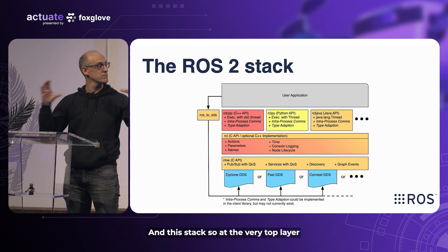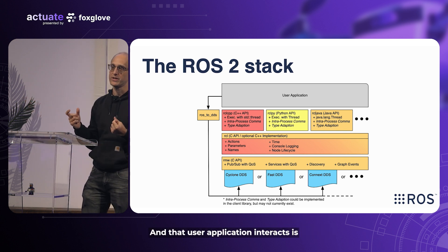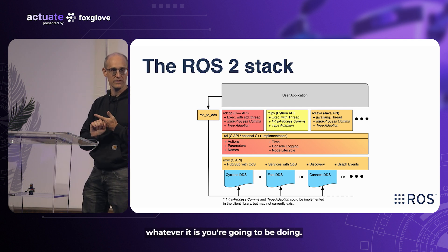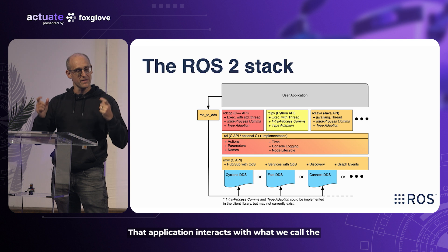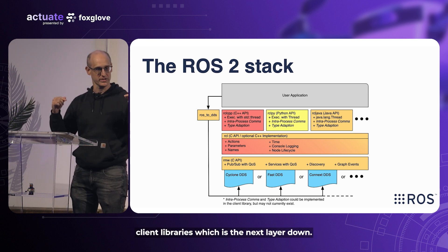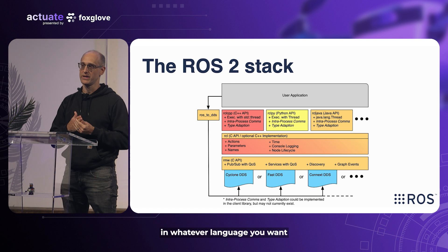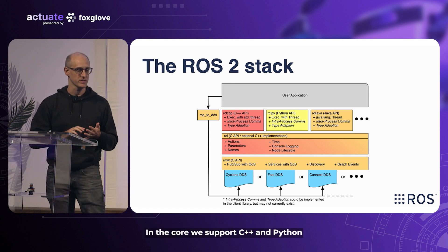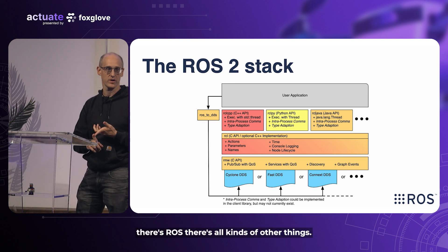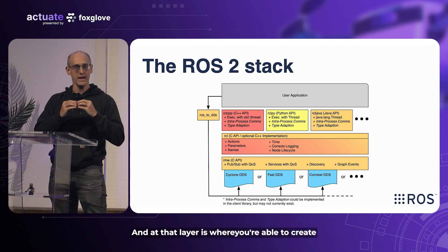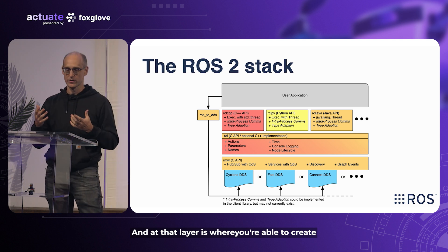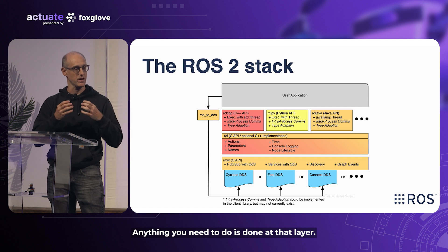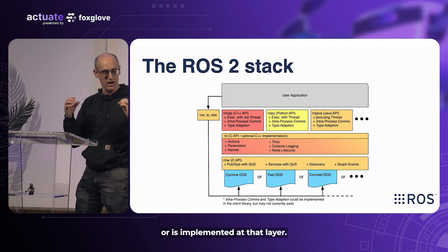At the very top layer of the stack you have the user application — your sensing, your controls, or whatever you're going to be doing. That application interacts with what we call the client libraries, which is the next layer down. Those client libraries are written in whatever language you want. In the core we support C++ and Python, but there's also Java, Rust, and all kinds of other things. At that layer is where you create publishers, create subscribers — anything you need to do is implemented at that layer.